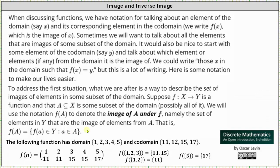Let's look at an example. Below we have the domain and the codomain for the function given using two-line notation. On the right we have the image of the set with elements 1, 2, and 3, which is equal to the set containing the elements that are the images of 1, 2, and 3 from the domain, which is equal to the set with elements 11 and 15.